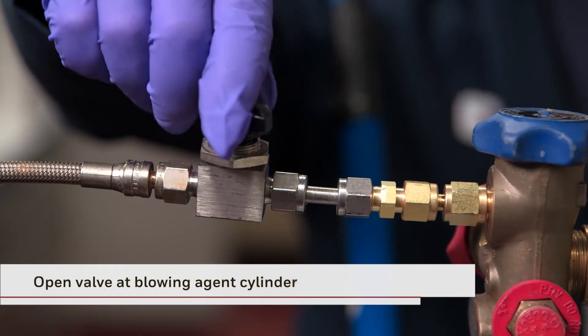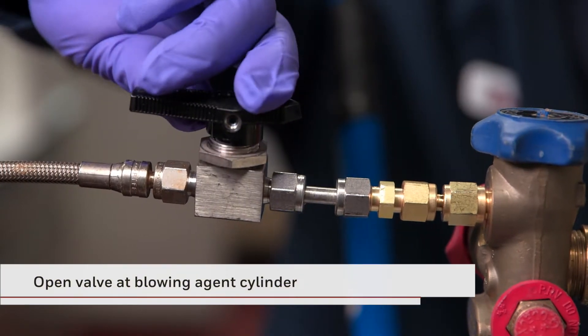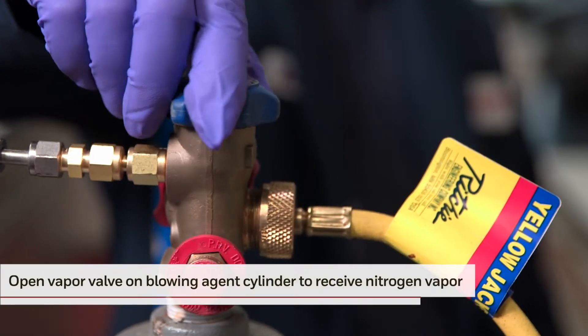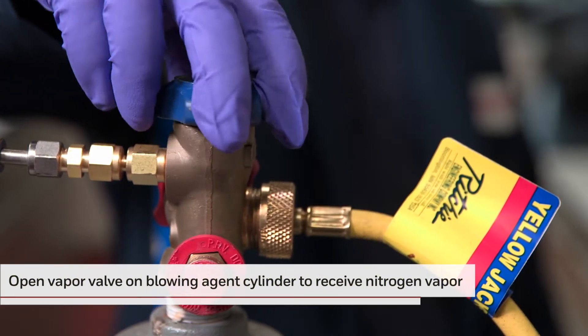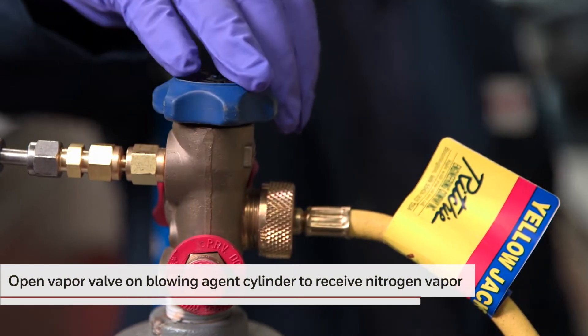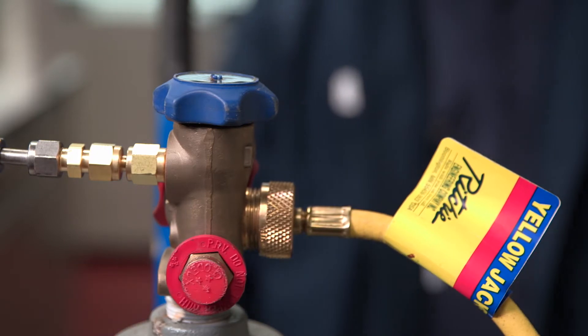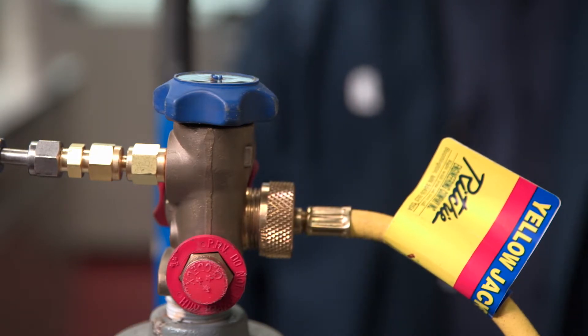Next, open the valve on the nitrogen line near the blowing agent cylinder. Next, open the vapor valve on the blowing agent cylinder to allow the nitrogen vapor to flow into the cylinder and pressurize it. This completes this stage of the pressurization process.